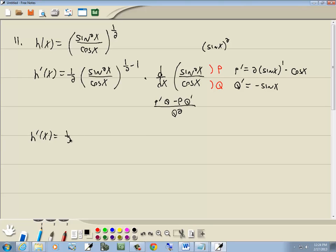Okay, so here we've got one half and then sine squared over cosine. One half minus one gives us negative one half times p prime, which is two sine x cosine x times q, which was cosine x, minus p, which was sine squared,